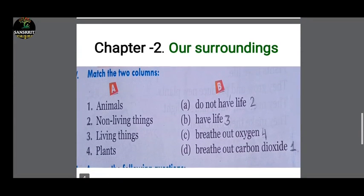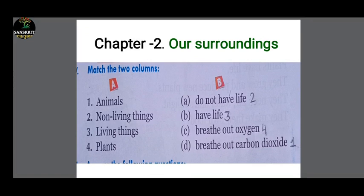Now Chapter 2 matching - living things and non-living things. You have columns A and B. Column A has 1, 2, 3, 4, and column B has A, B, C, D. So we match these.